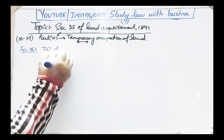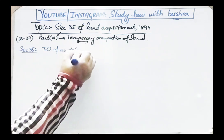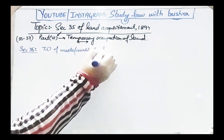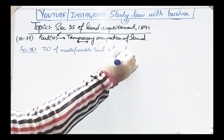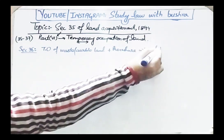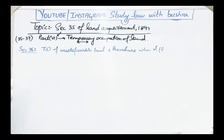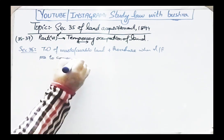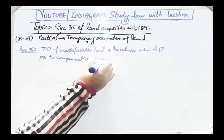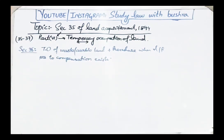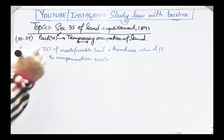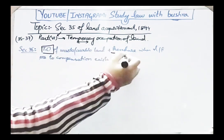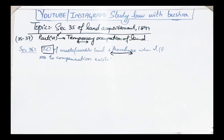Section 35 is titled 'Temporary Occupation of Waste or Arable Land and Procedure When Differences as to Compensation Exist.' This section covers two things: first, temporary occupation of land; and second, the procedure to be adopted when the two parties cannot settle compensation and an objection arises.